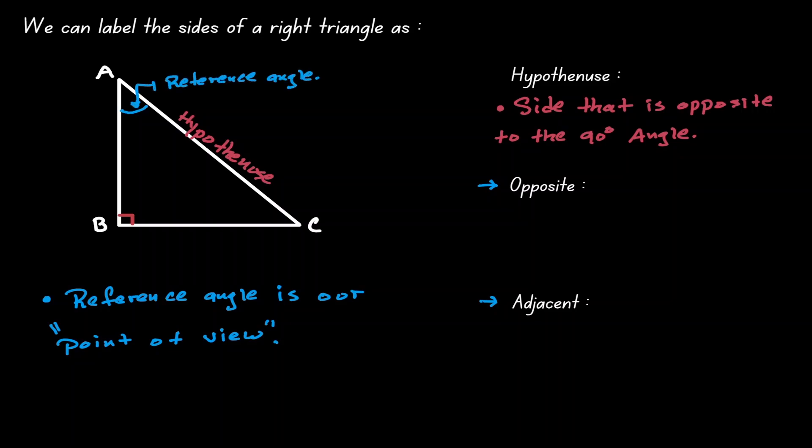If we consider A to be our reference angle, then the side that we're going to label as opposite is going to be the side that is opposite to the reference angle, which in this case is going to be BC.